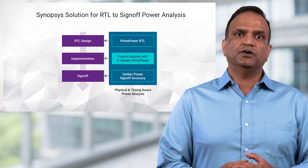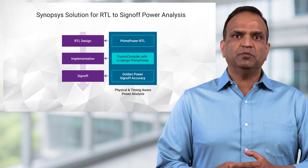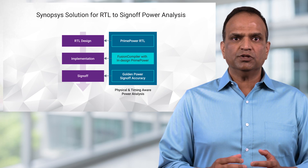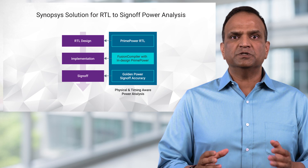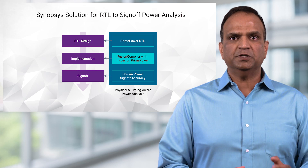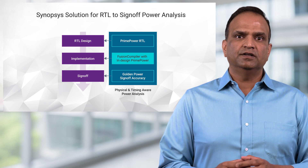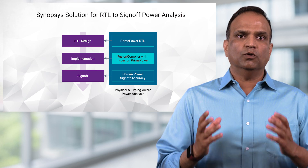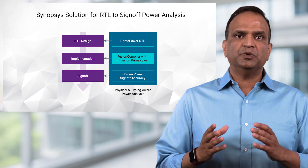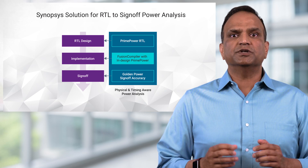Synopsys Fusion Compiler RTL to GDS2 solution enables an in-design flow with Prime Power to ensure that power optimization decisions at each stage of design implementation are made with sign-off quality power results. The end goal is faster convergence, optimal PPA, without late-stage surprises during sign-off.